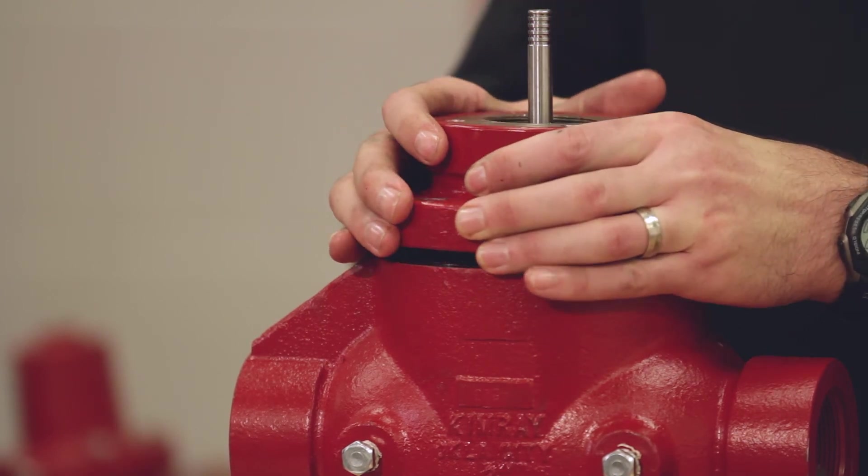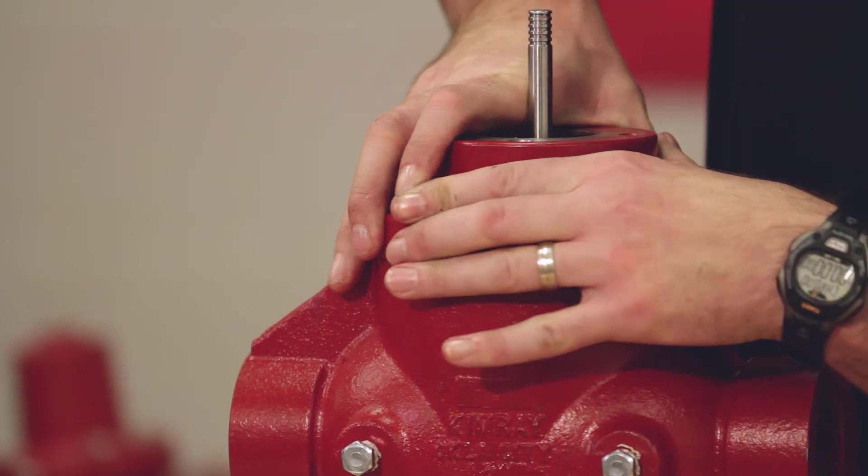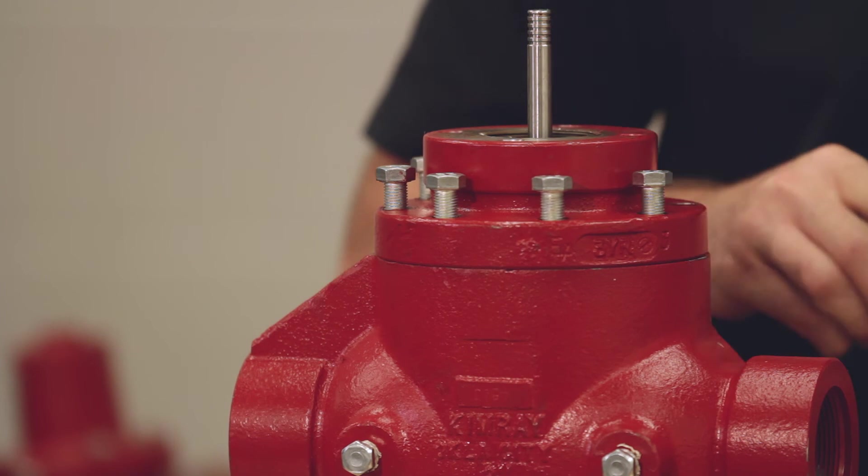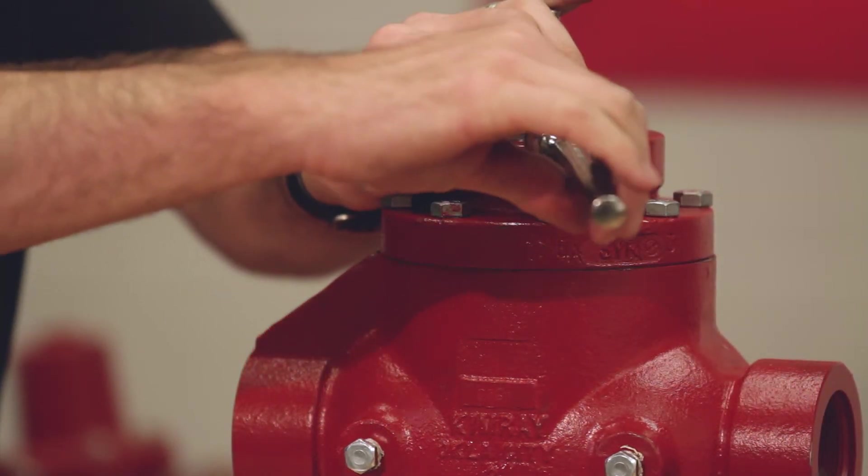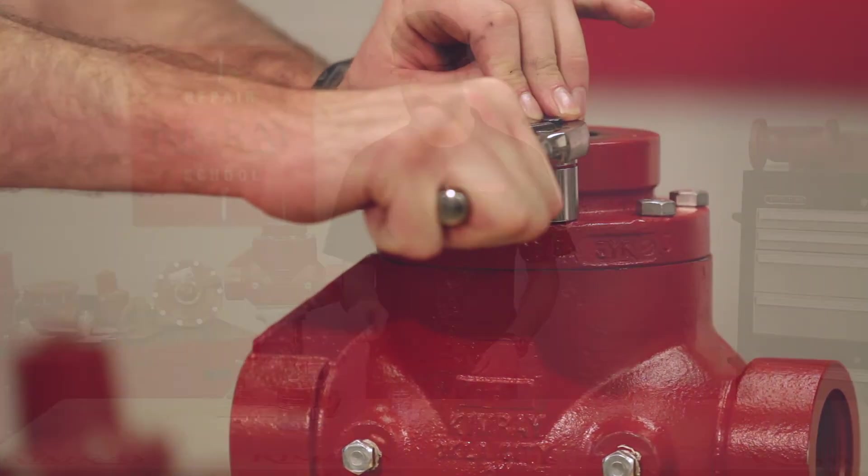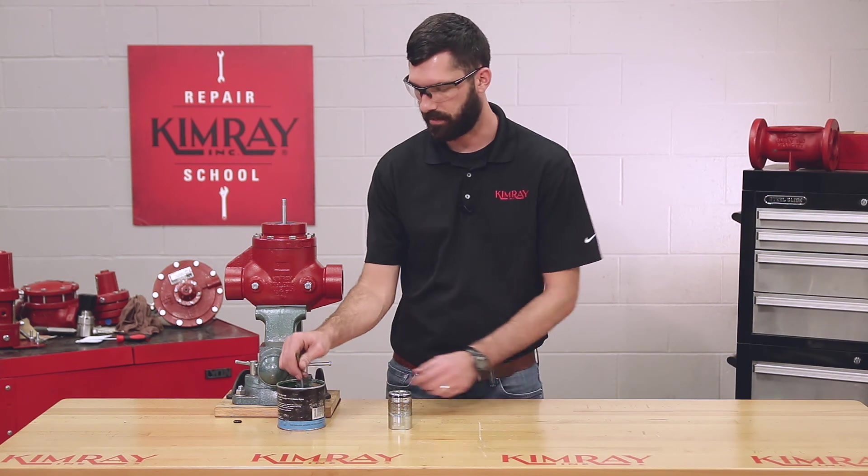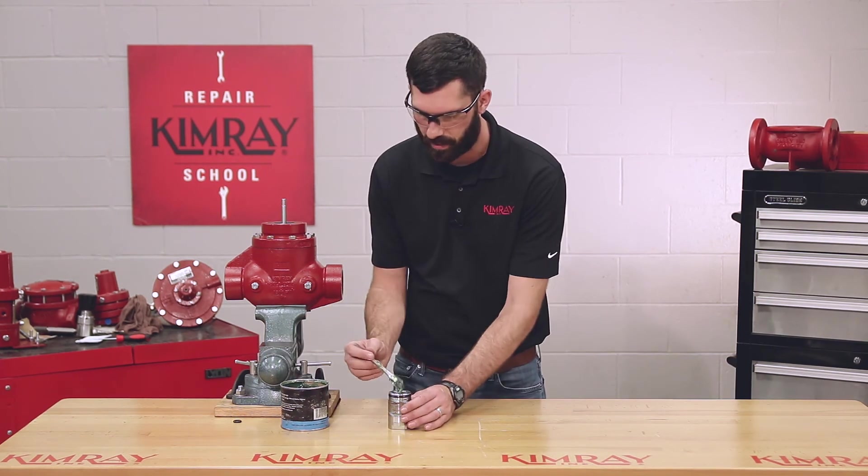At this point you can mount your upper housing and align your bolt holes. Now you can make sure that your stuffing box assembly is packed full of grease and you can thread it back onto your upper housing.